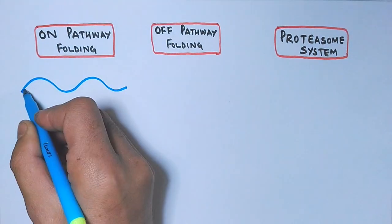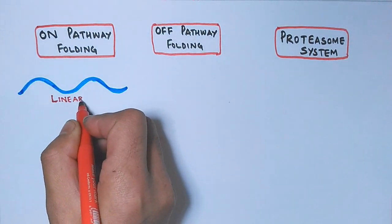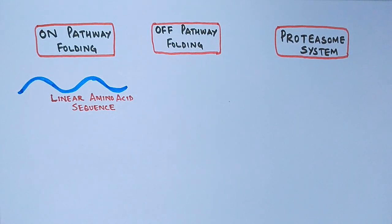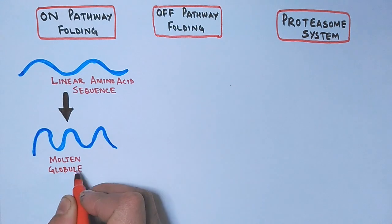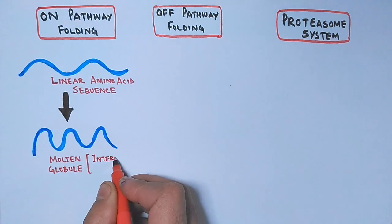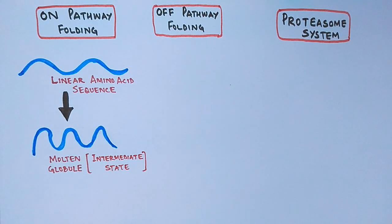First of all we have a linear amino acid sequence which needs folding to get it functional. And this process of protein folding proceeds via an intermediate state called the molten globule state. Under normal conditions the molten globule state is transformed into final shape, that's the native state of protein.